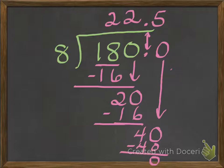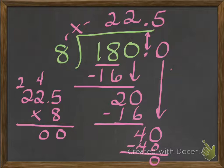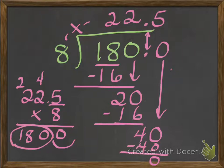Once I get to zero, I don't have to bring down any more zeros. I'm all done. My answer is 22.5. I can multiply that back up: 22.5 times 8. The numbers that you multiply on the outside equal the number on the inside. 8 times 5 is 40 — carry the 4. 8 times 2 is 16, plus 4 is 20 — carry the 2. 8 times 2 is 16, plus 2 is 18. I have one digit after the decimal point, so I move the decimal point one place, and my answer is 180 — which is the dividend that I started with.